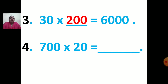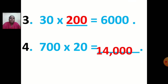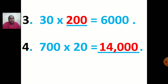Now we will see the fourth sum: 700 multiplied by 20 equals dash. First, multiply 7 by 2 — set the table of 7. 7 twos are 14. After 14, how many zeros are you going to place? 3 zeros. So your answer will be 14,000. That is, 700 multiplied by 20 is equal to 14,000.